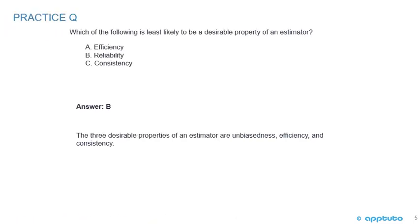That question was pretty easy if you remembered your mnemonic of CUE: consistency, unbiased, and efficiency. Clearly, R — reliability — does not belong, because the question is looking for the least likely desirable property. R is incorrect. And that's the last slide for this LOS.